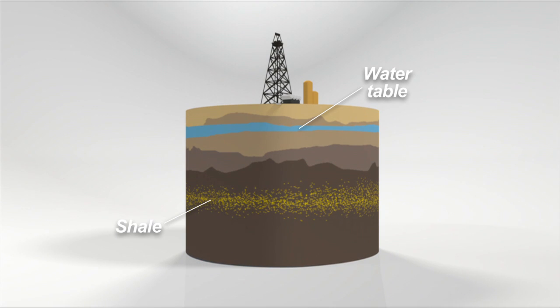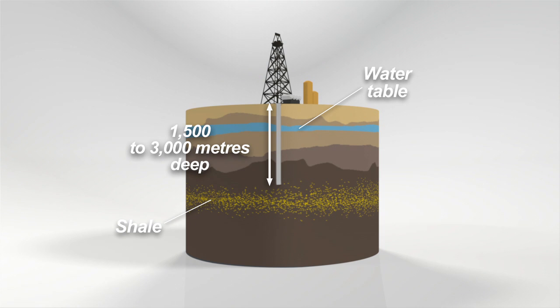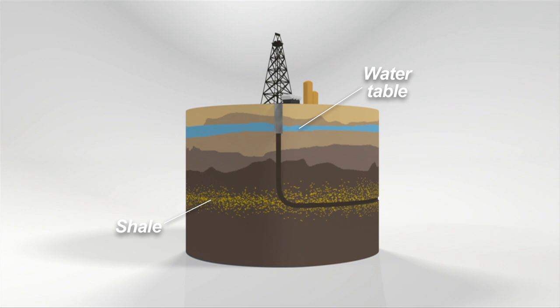A rig drills deep into the ground to reach the shale deposit and then continues horizontally, often for several kilometers. Next, huge quantities of water are injected into the hole, the pressure cracks the shale, releasing the gas.